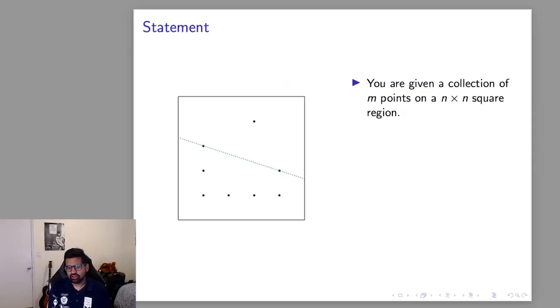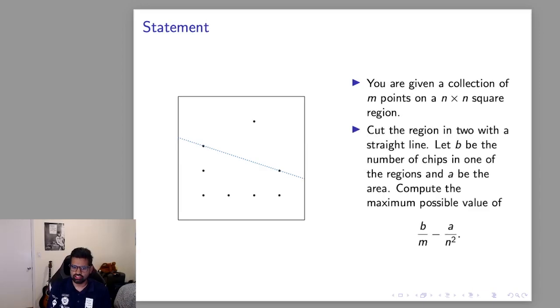So in cookie cutter you're given this large square cookie with M points on it and you want to cut this cookie using a single straight line. Let B be the number of chips on your half of the cookie and let A be the area of your cookie. You want to maximize this unitless quantity which is the fraction of the chips you get minus the fraction of the area you get.